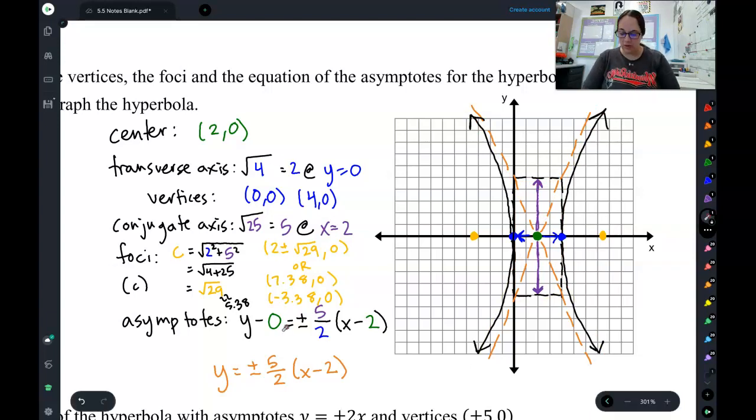So, for my asymptotes, I have y minus k, x minus h here. And then, for my guide rectangle, I rise 5 and run 2. Don't forget your plus or minus. So, those are the equations for these two asymptotes.